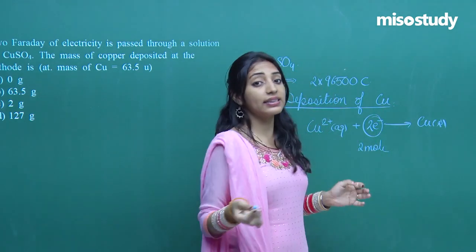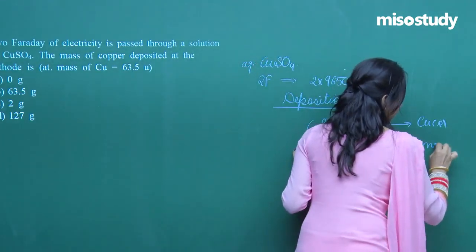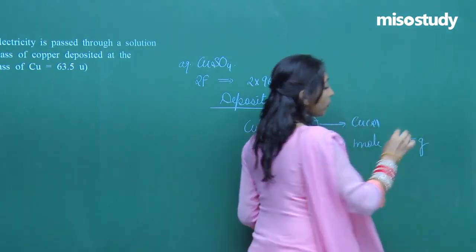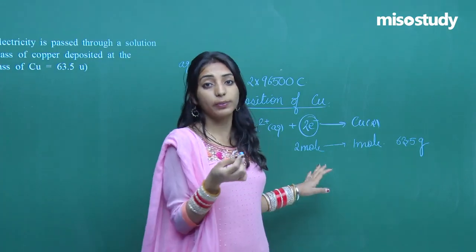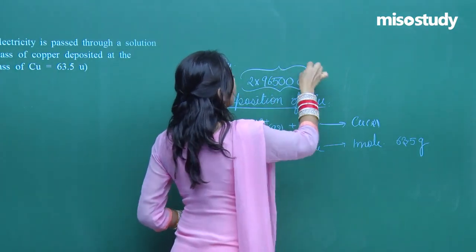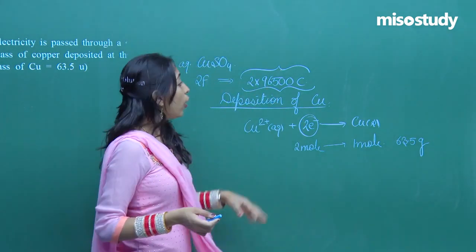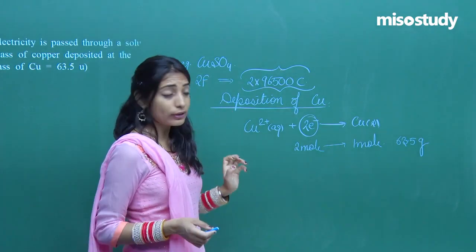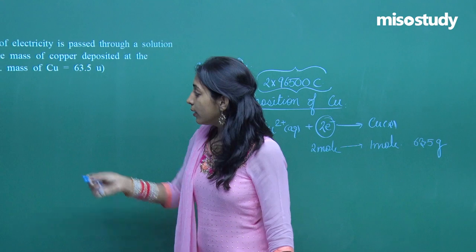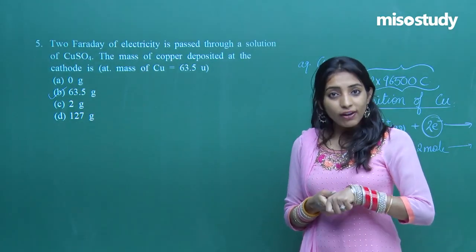The molar mass of copper is 63.5 g/mol. So when 2 moles of electrons — which carry a charge of 2 × 96,500 coulombs, i.e., 2 Faradays — are passed, 1 mole of copper is deposited, which amounts to 63.5 grams. Option B is the correct answer.